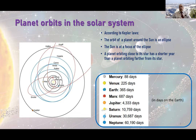The American probe landed in February, the Chinese one last week, and the Arab probe is now orbiting Mars. Everyone was interested in that, and this was a good opportunity to show models to students using very nice tools. According to Kepler's laws, the orbit of a planet around the sun is an ellipse, but most of these ellipses are very close to circles. The sun is at the focus of the ellipse, and a planet orbiting close to its star has a shorter year — the velocity on the orbit is higher when the planet is closer to the sun.